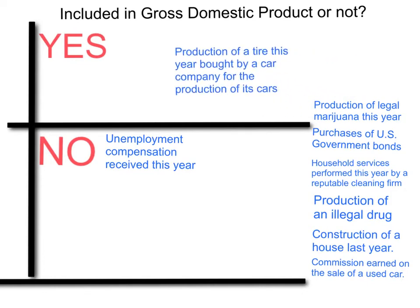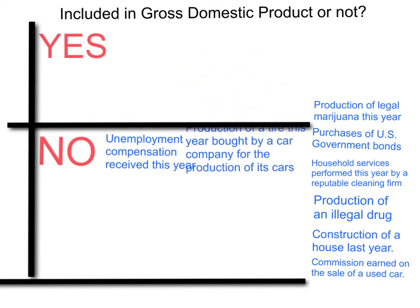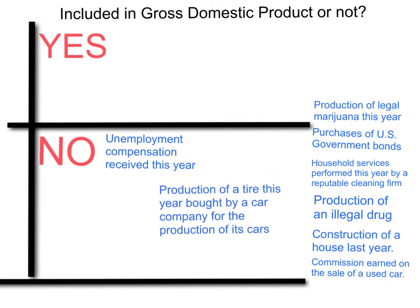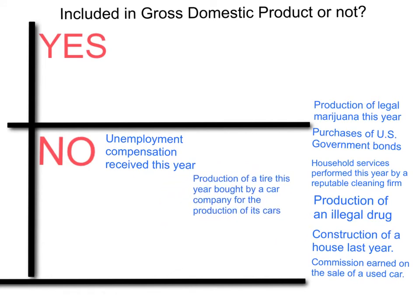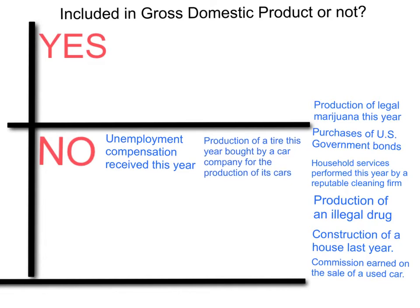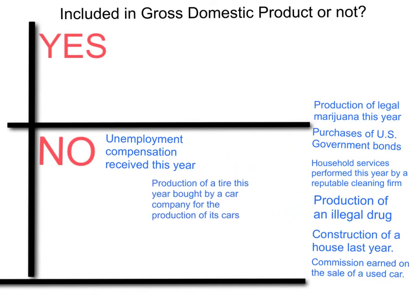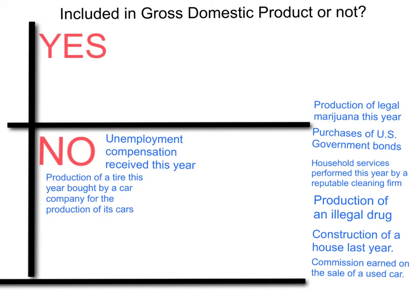Production of a tire this year bought by a car company for the production of its cars — that's also not included because it's actually an intermediate good. It is a real good produced, but because it's part of a bigger product, a final product, we're going to put it in the no box. It's an intermediate good; it's not included.